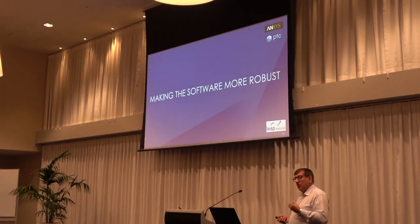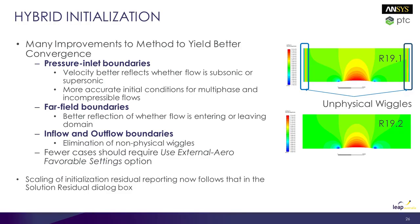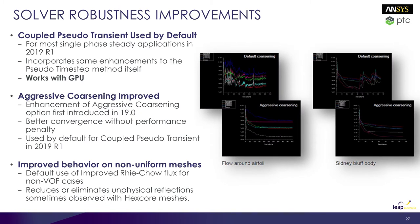We also want to make the software more robust. There have been significant improvements here. First, improving hybrid initialization — there were cases where you'd get unphysical wiggles near an inlet or outlet that caused problems when starting the simulation. All those issues have been fixed. The scaling of residuals is now consistent with your chosen method. What we're doing here is kicking off the solution with a potential flow problem. The solver team is showing some really important messages: if running any steady-state simulation in Fluent, you will now automatically be directed to the coupled solver pseudo-transient.